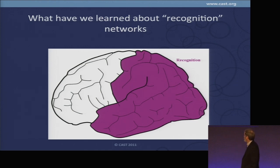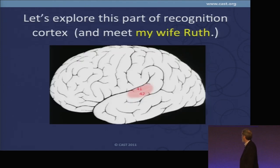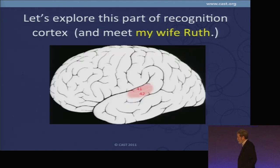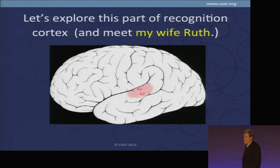We call the back part recognition networks in the UDL framework. They allow you to recognize the outside world, make sense of it, and act smartly. I want to look at recognition cortex — specifically around where auditory cortex is — where ultimately the little signals from your ear come to be analyzed and made sense of.